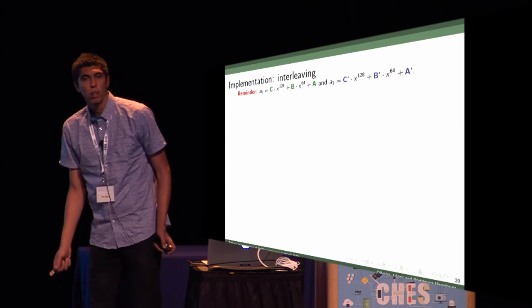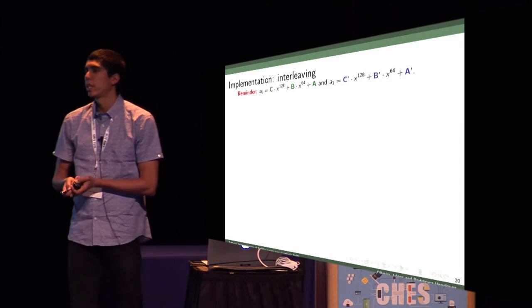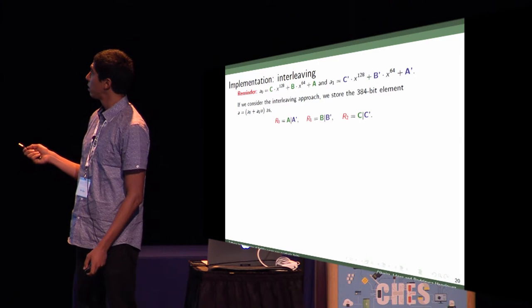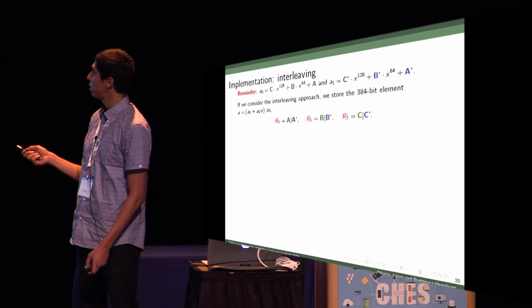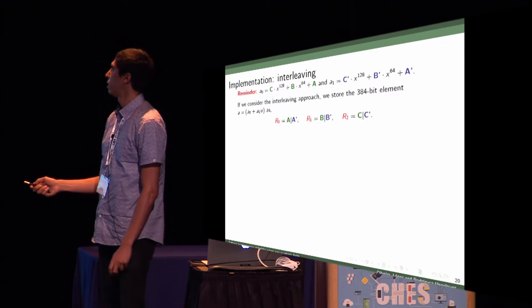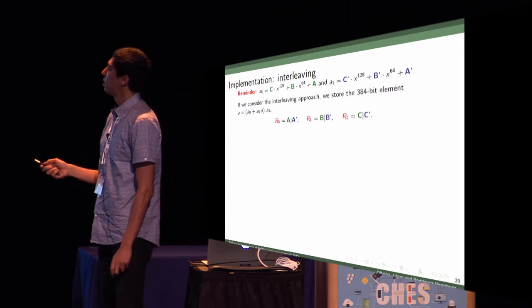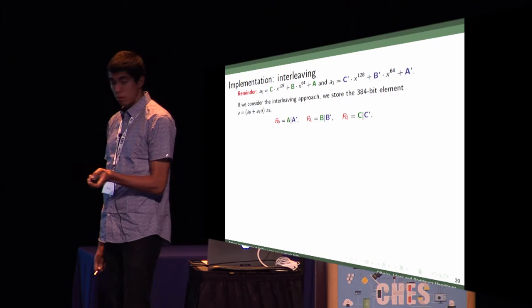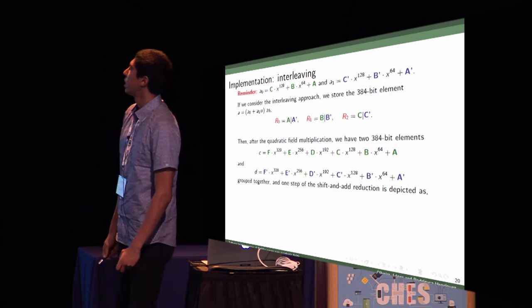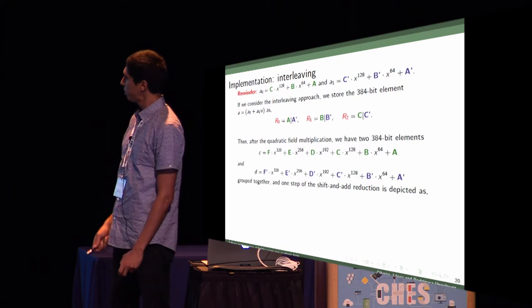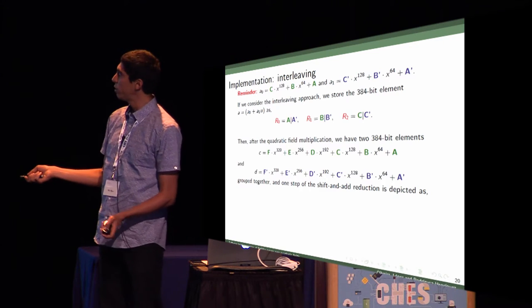However, if we use a method called interleaving, we store each word separately. For example, the first word comes here, and the first word of the other term comes there. We interleave the linear and the constant terms of the quadratic field element. Because of that, after the quadratic field multiplication, we have two different elements, and we can group them together.